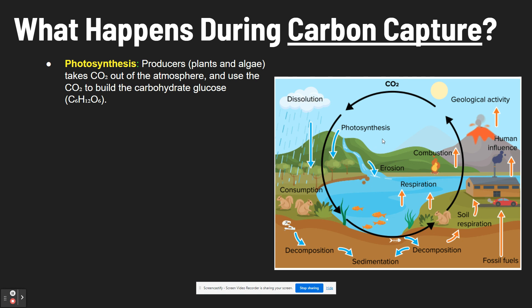Let's focus on carbon capture first. During carbon capture, photosynthesis happens — this is where producers like plants and algae take in CO2 from the atmosphere and use it to build carbohydrates like glucose, C6H12O6.